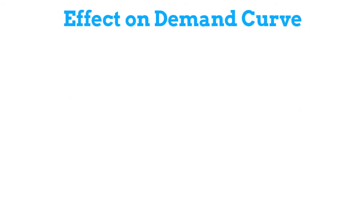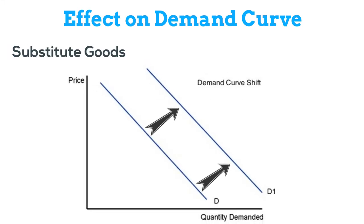Now we will understand the effect of change in the price of related goods on the demand curve of a good. In case of substitute goods, an increase in the price of the substitute good will lead to a shift of the demand curve to the right.